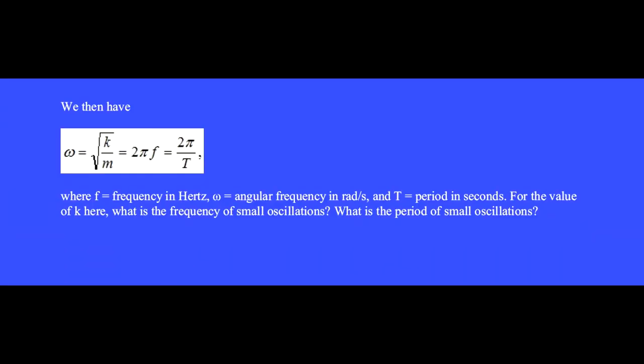We then have omega equals the square root of k over m equals 2 pi f equals 2 pi over the period. Where f is the frequency in hertz, omega is the angular frequency in radians per second, and big T is the period in seconds. For the value of k here, what is the frequency of small oscillations? What is the period of small oscillations?